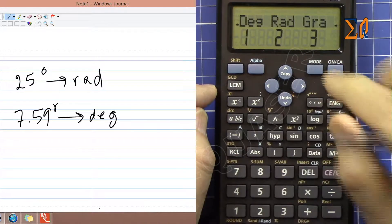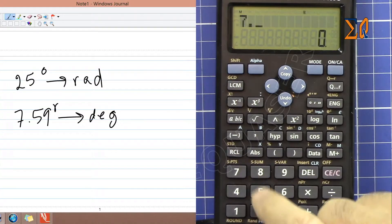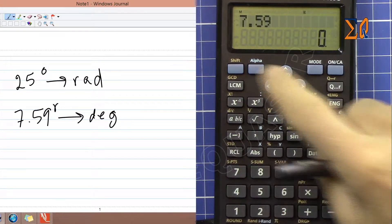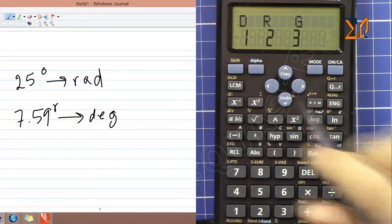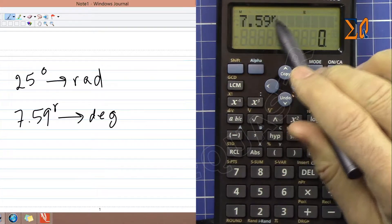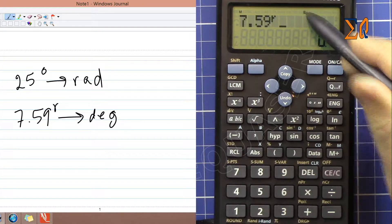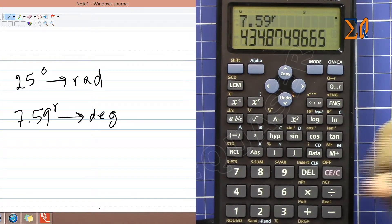Press Mode, go to the right, and select degree - that's option 1. Enter 7.59, then press Shift and Answer. Now indicate that this is radian - press 2, and you see 'R'. Press equals and you'll get the degree value.